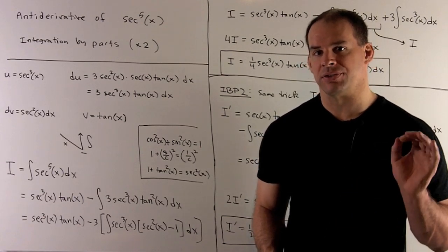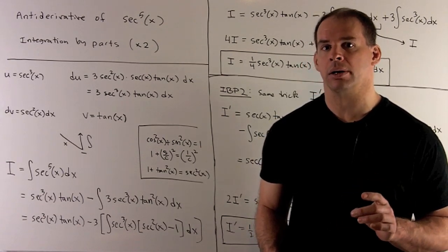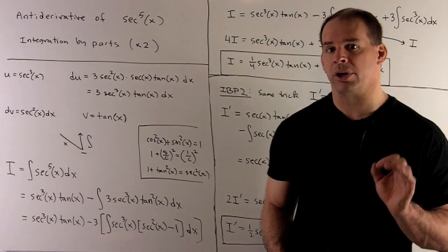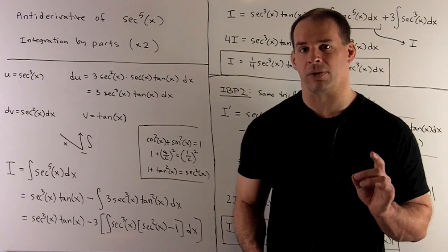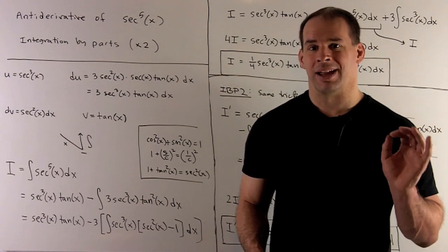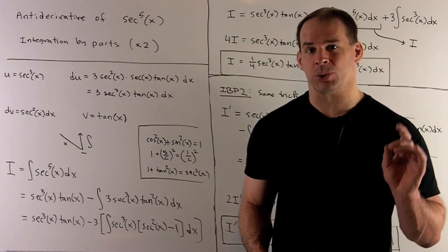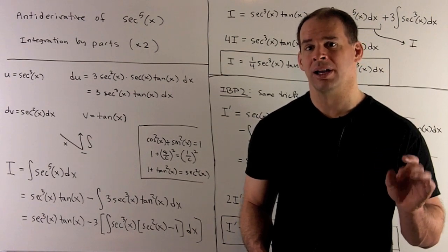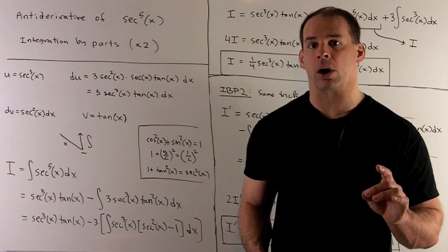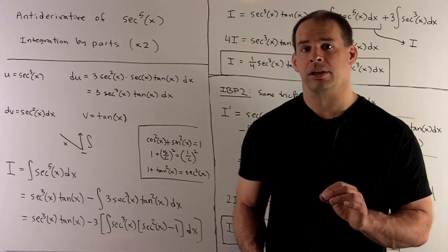Let's find the antiderivative of secant x to the fifth power. The procedure we're going to use will work for any secant to an odd power. Once you have that, you can do any secant to an odd power times tangent to an even power. We'll point out how to do that at the end.